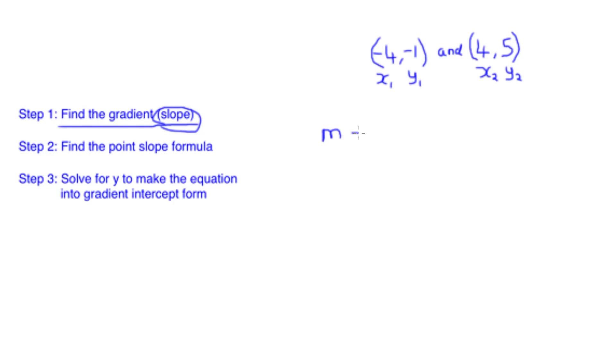Now our slope is always referred to as m in our equations, and the equation to find a gradient is y2 minus y1 over x2 minus x1. All we need to do now is plug in our values that we found earlier.